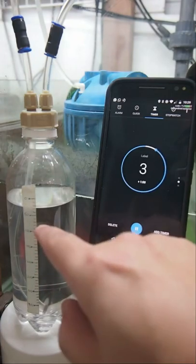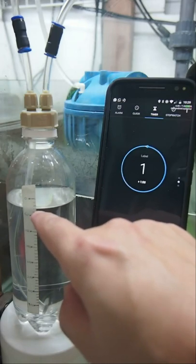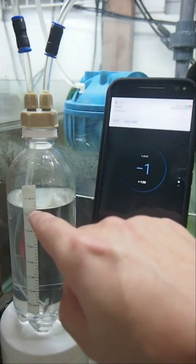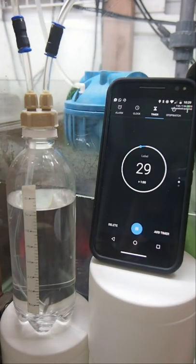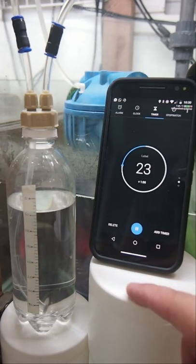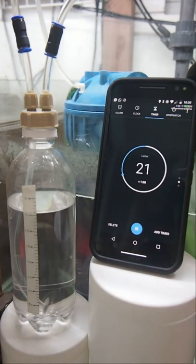And 30 seconds later, the water level is at about 30 mils, which means that in one minute, I inject about 60 mils of CO2. That means my injection rate is 60 milliliters of CO2 per minute. So let me stop this.